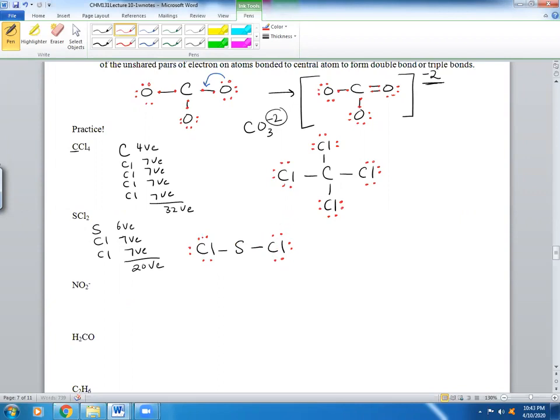Do you have any leftover electrons? Well, I used 8 and 8 is 16. So I have 4 leftover. Then let's ask, does S have an octet? It does not. It only has 2, 4. So it needs 4 more. Where do you think these 4 go? They go on S. So this is a case where you have leftovers. You gave them to the central atom and it made it happy.